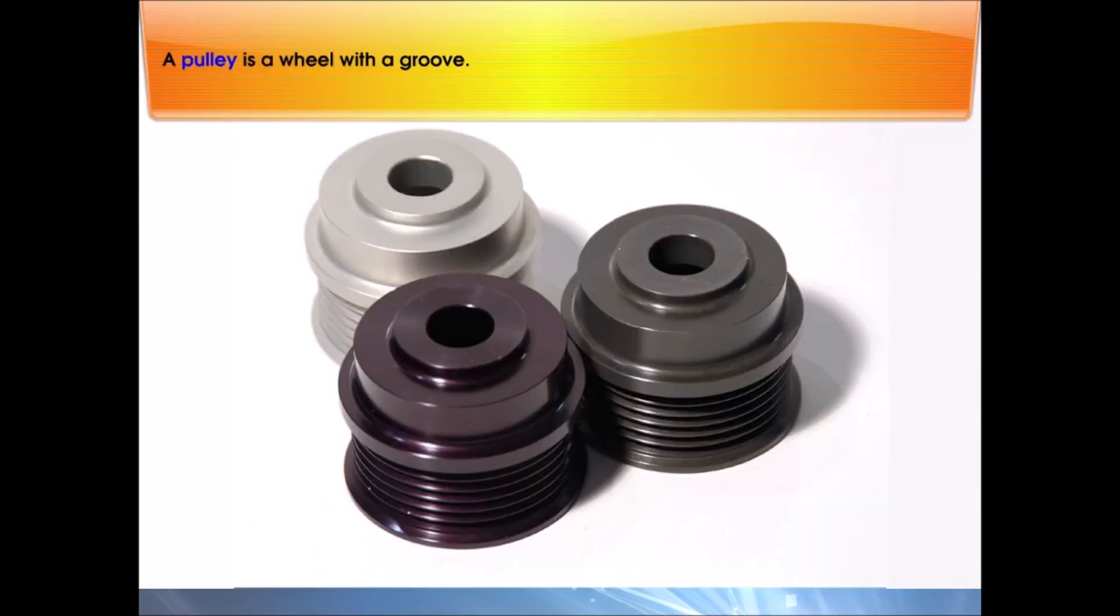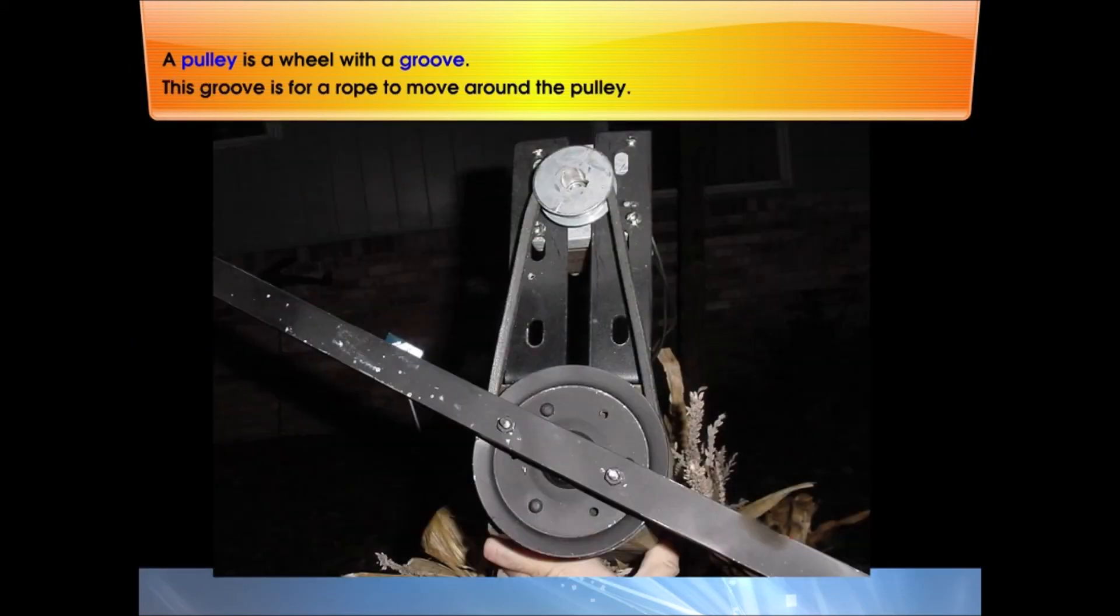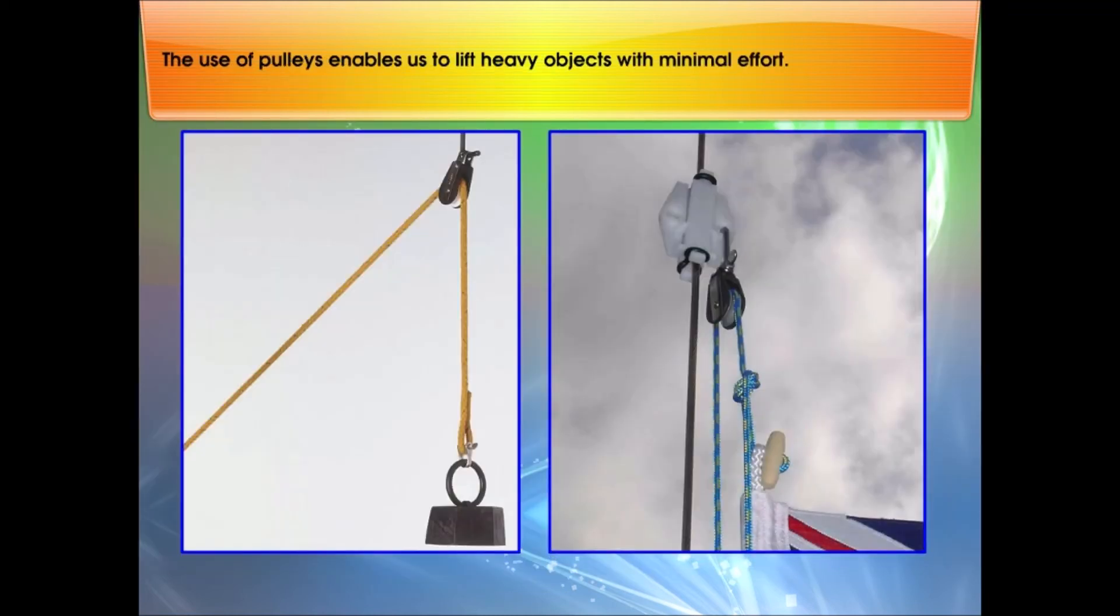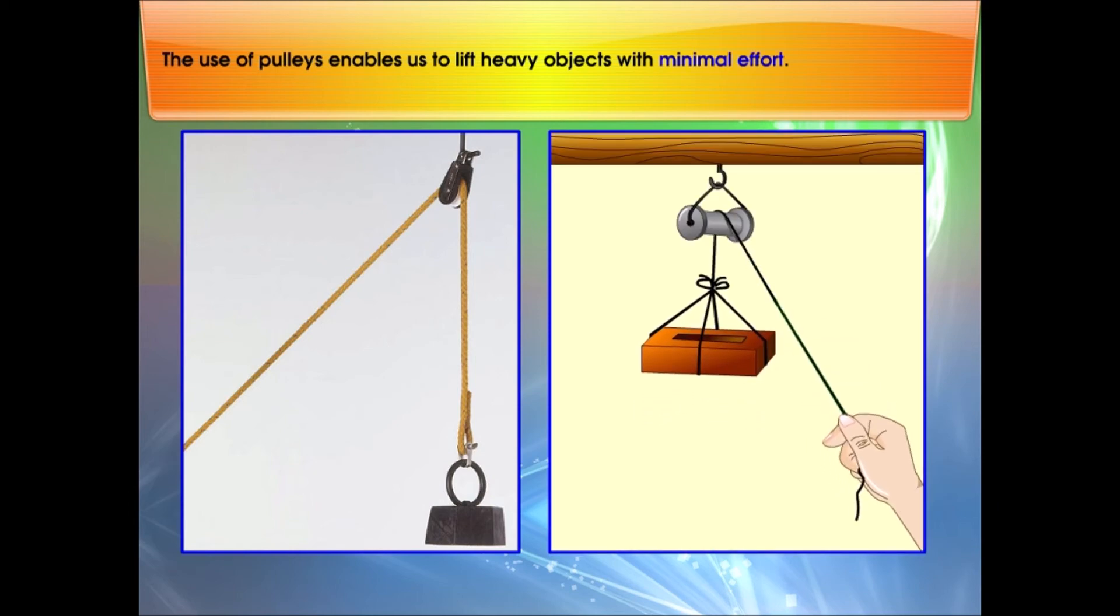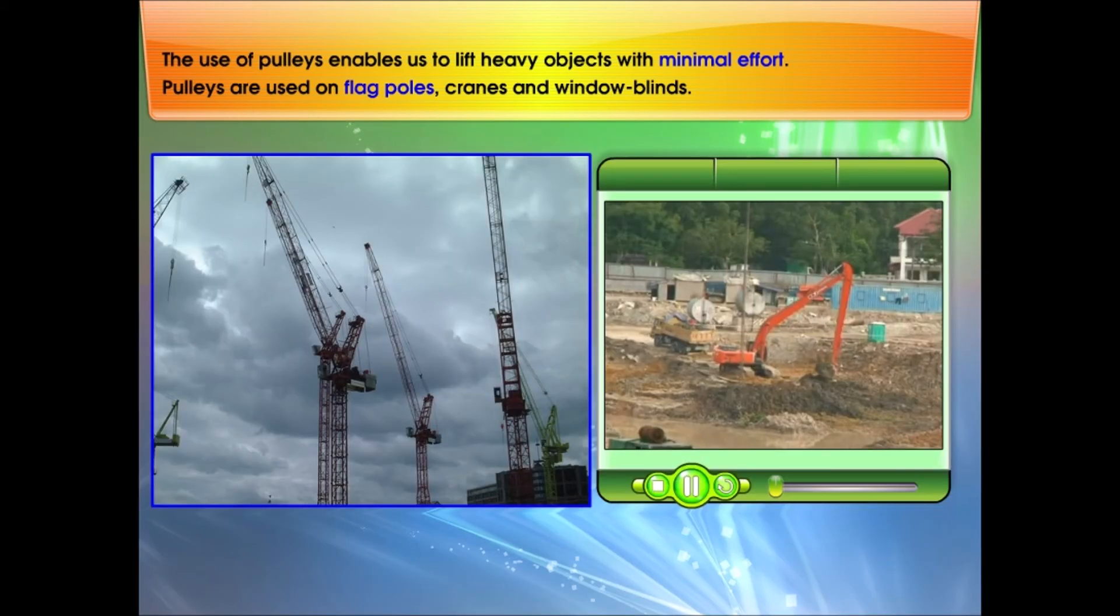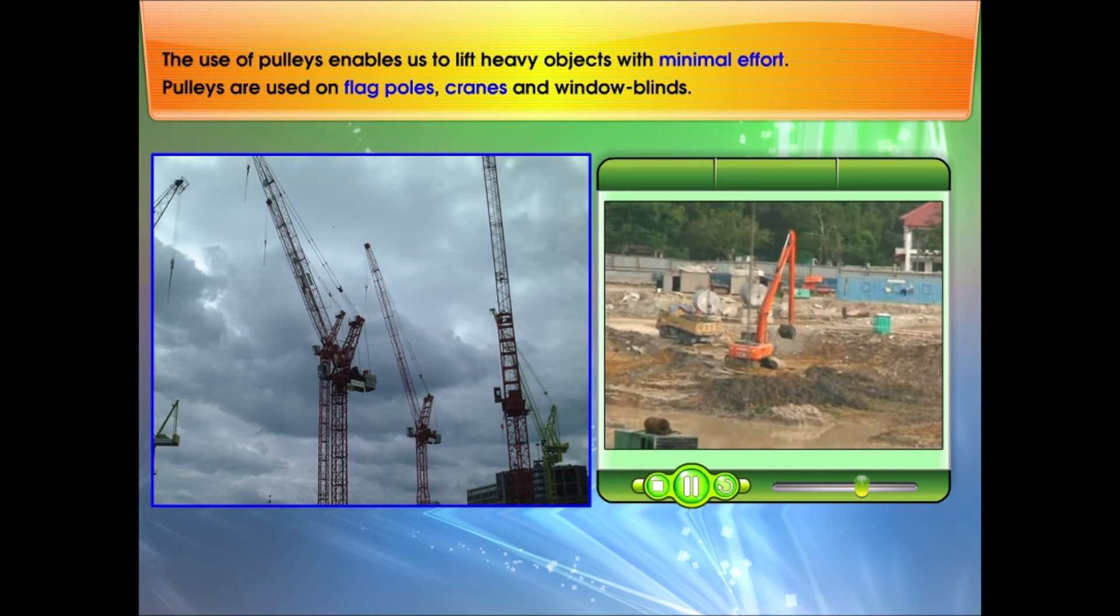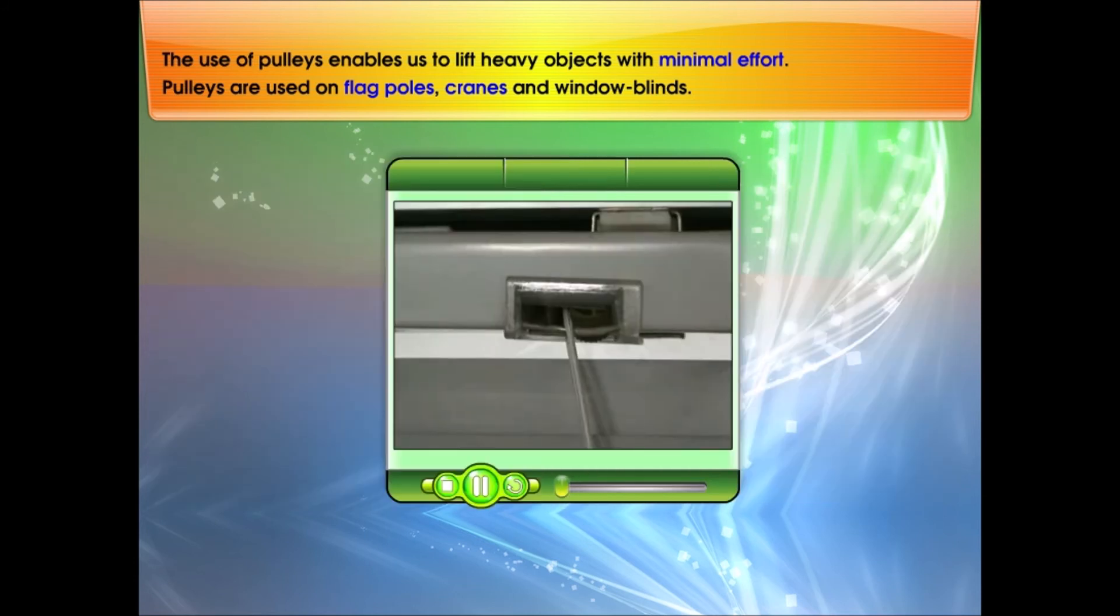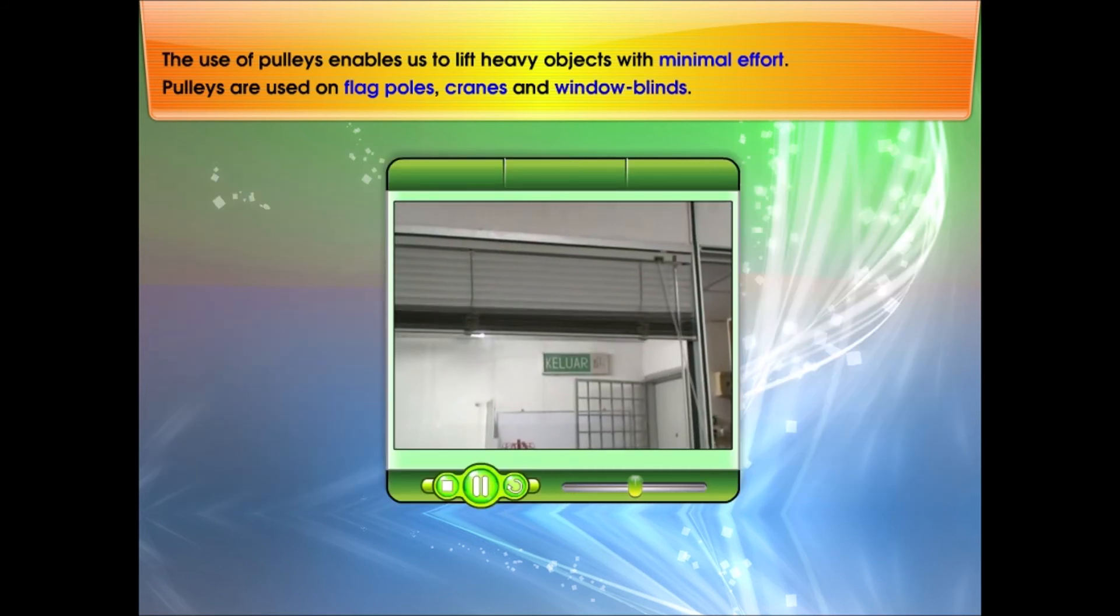A pulley is a wheel with a groove. This groove is for a rope to move around the pulley. The use of pulleys enable us to lift heavy objects with minimal effort. Pulleys are used on flag poles, cranes, and window blinds.